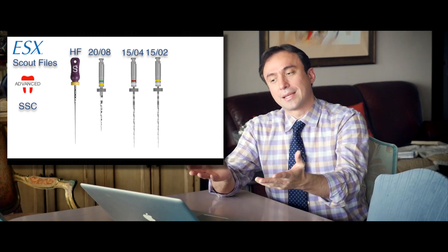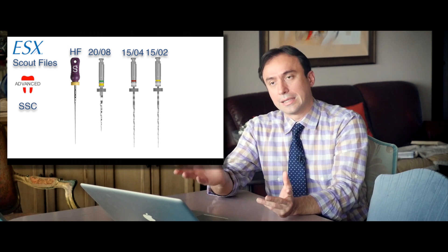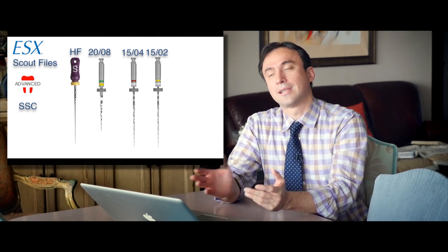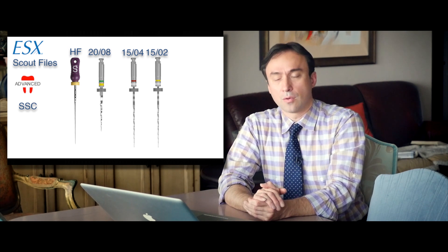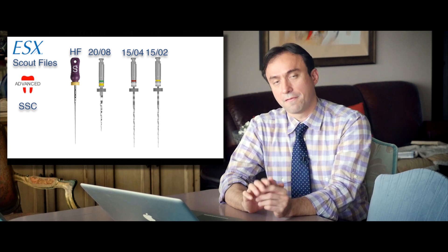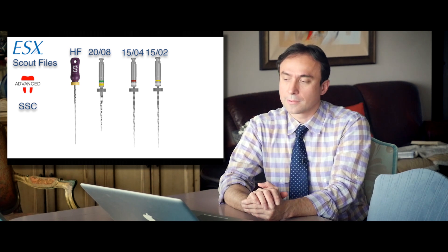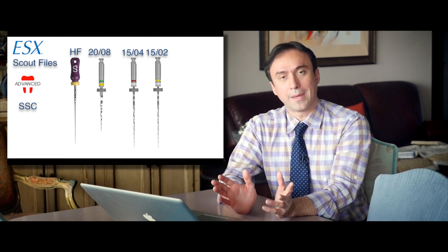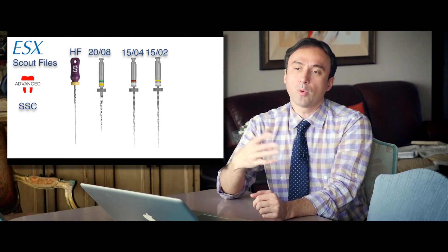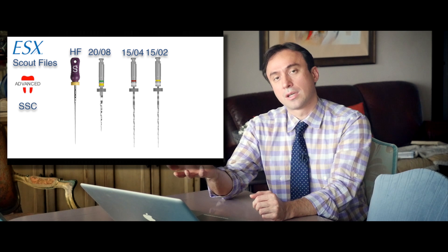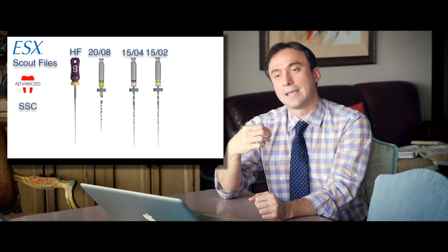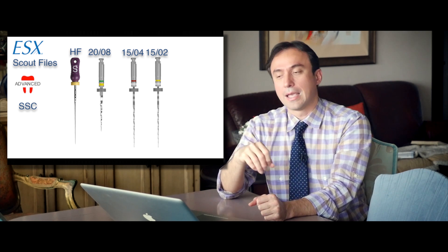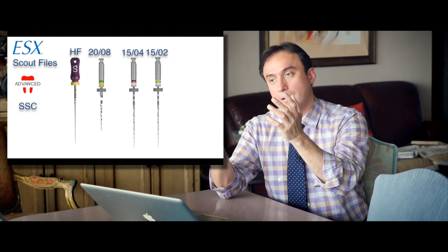And then you could instrument the canals to a size basically 10 hand file. And then you would end up using the two scout files. The two scout files that we will then recommend for the ESX are the 1504 and the 1502 files. And the reason for that is we believe that a 15 tip is a safer bet because it's a little bit stronger. And most of the time when you're using files, the engagement on the file doesn't really occur at the tip itself. It does occur due to the taper.